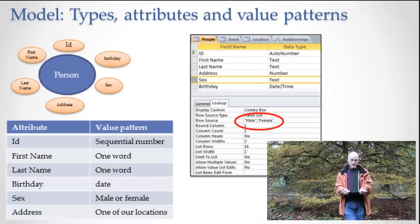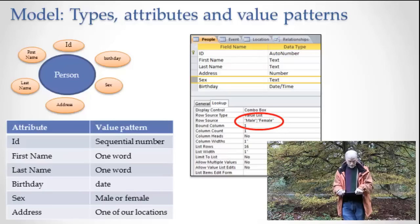Okay, we said we model types, attributes, and value patterns, right? And here's the little diagram I gave you. We have a person, a person has an ID, the person is the type, right?